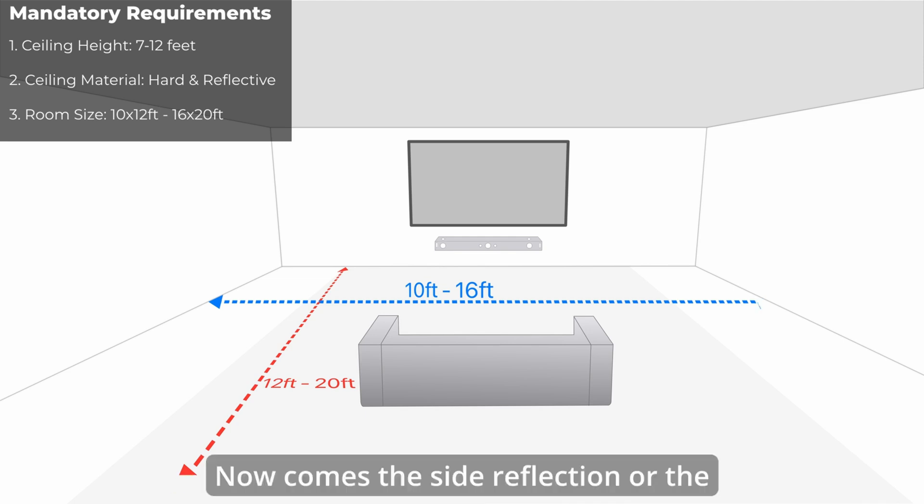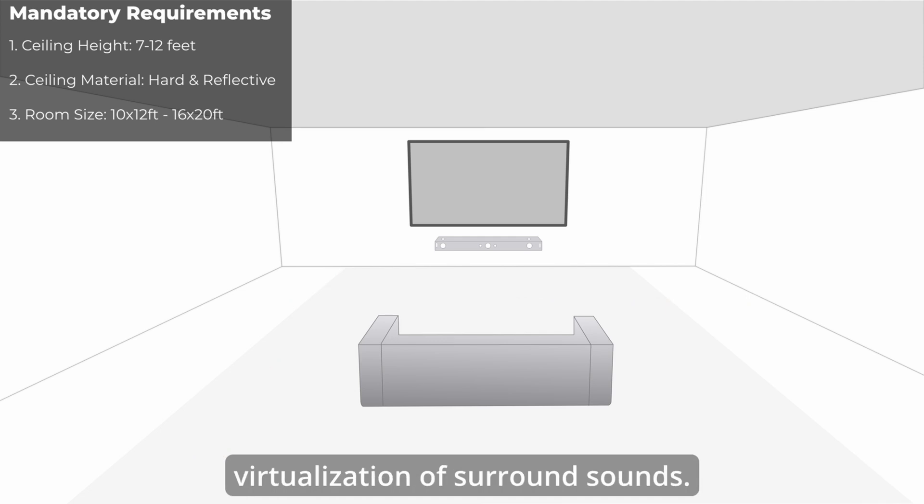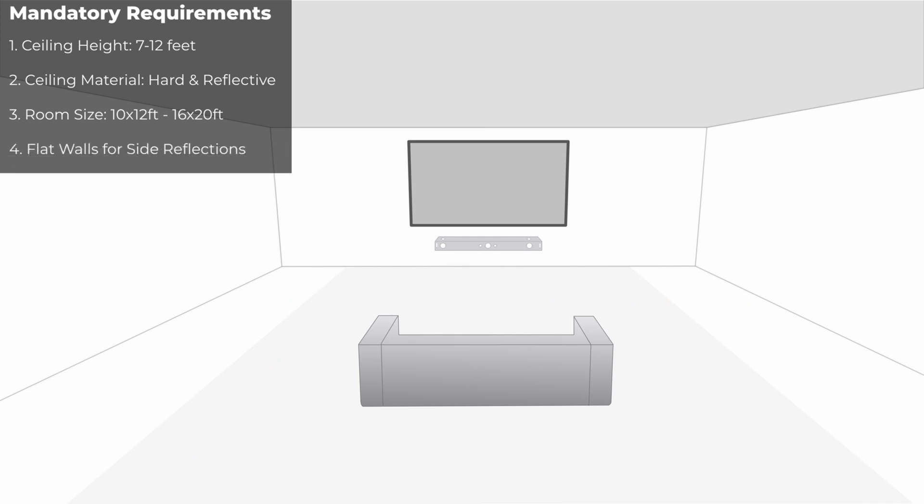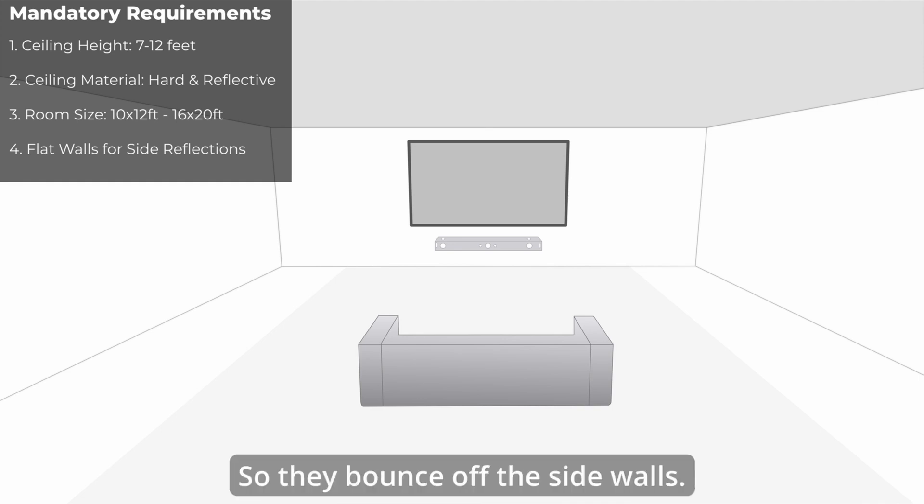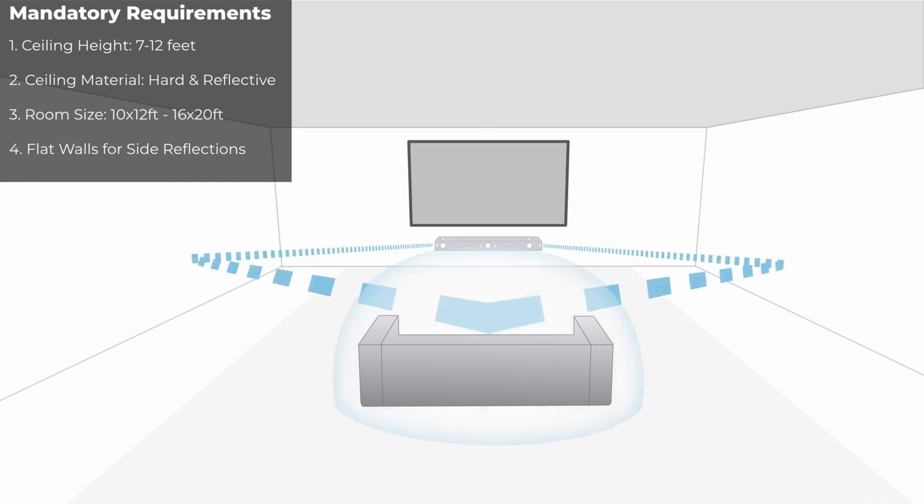Now comes the side reflections or the virtualization of surround sound. Some of the soundbars, if you've noticed, have side-firing speakers as well. So they bounce off the side walls. If your room is open at either side, then the side reflections won't work.